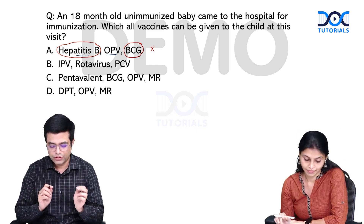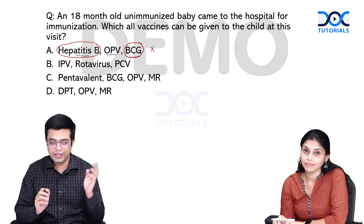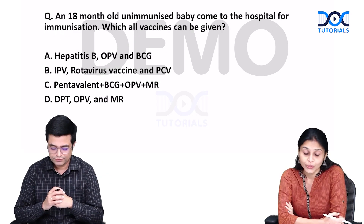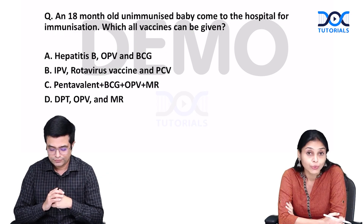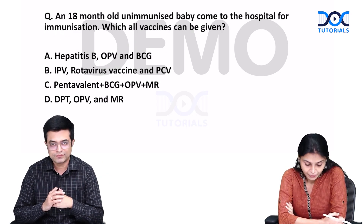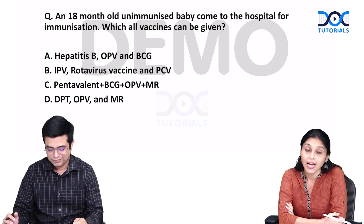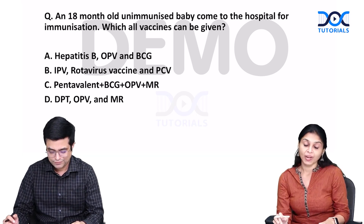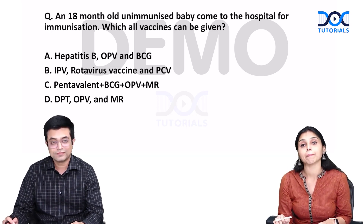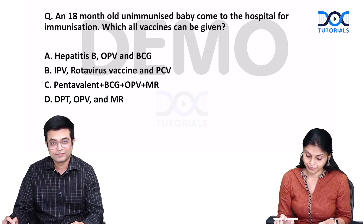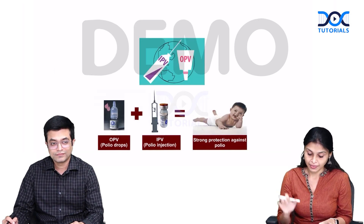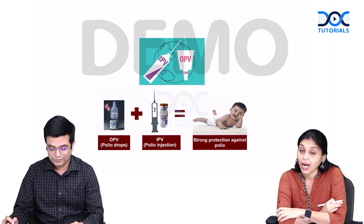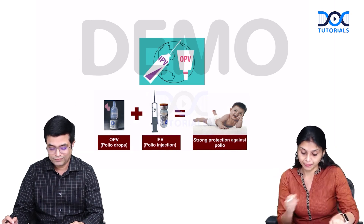Let us move to option B. Over to Dr. Regissi. Option B says IPV, rotavirus vaccine, and PCV. Let us start with the first one — IPV.